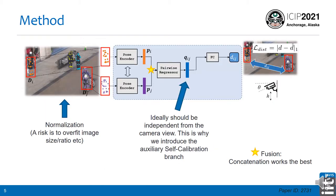Our method relies on a standard off-the-shelf person detector which outputs skeletal joints in the form of 2D points. After normalizing them, they are fed to a pose encoder to produce a person representation PI. People representations are then concatenated pairwise, and an additional neural network which we call the pairwise regressor produces a representation Q, from which we regress the actual metric distance between the couple of people.